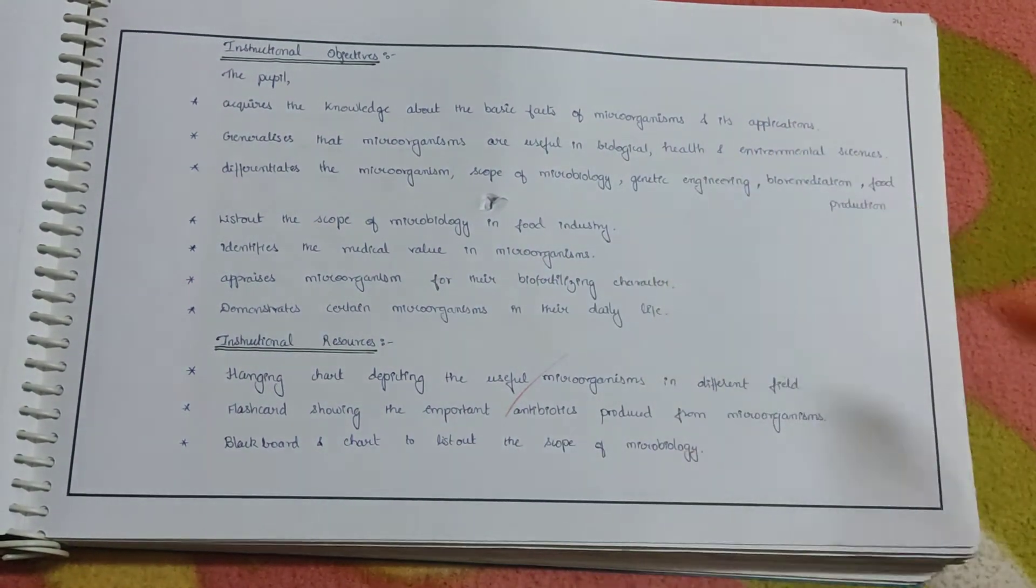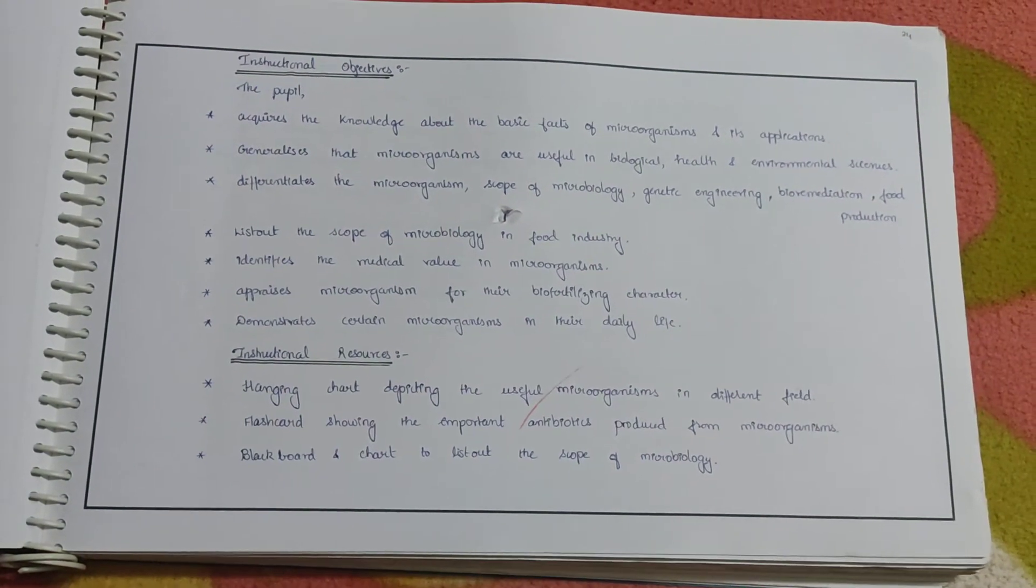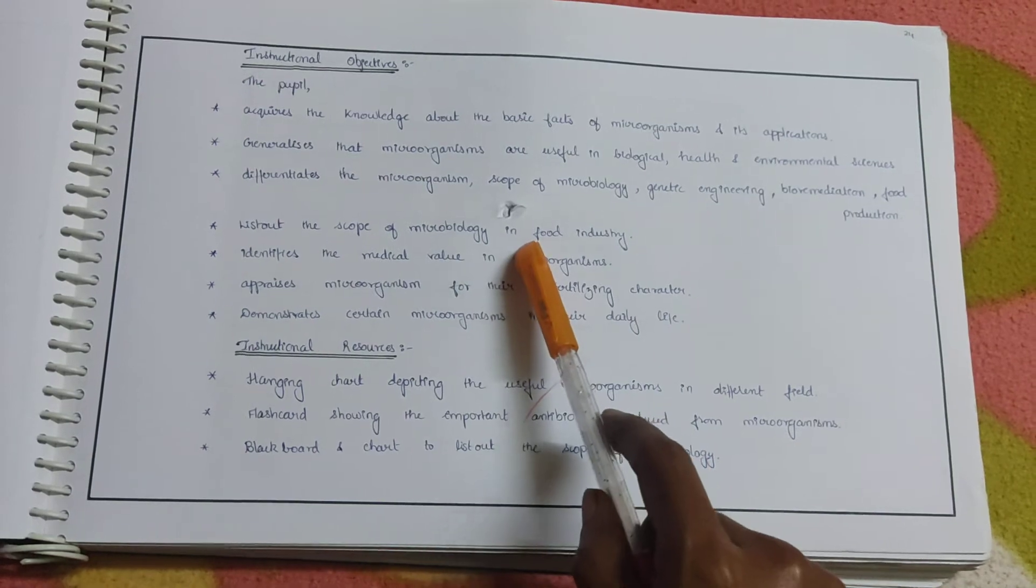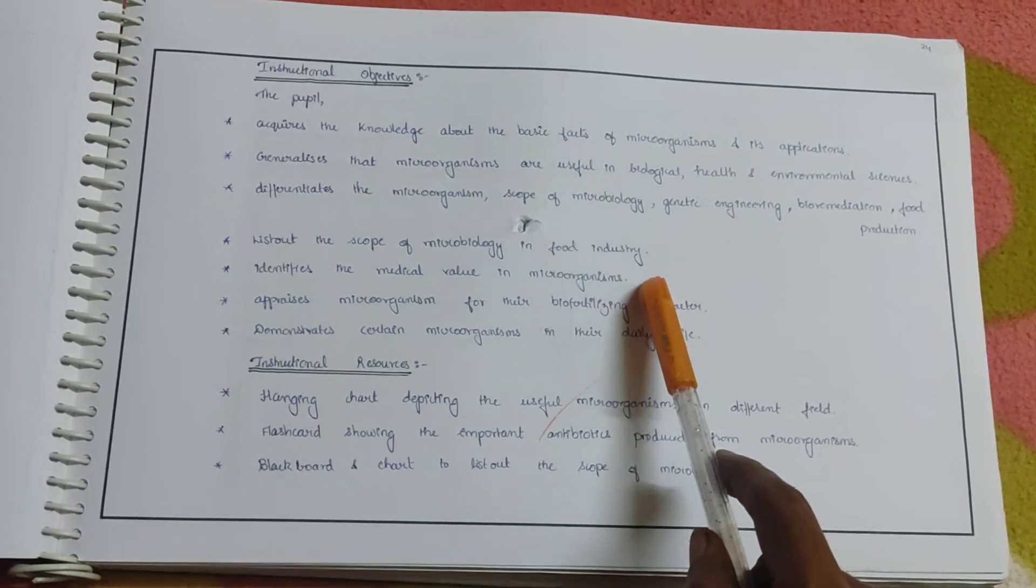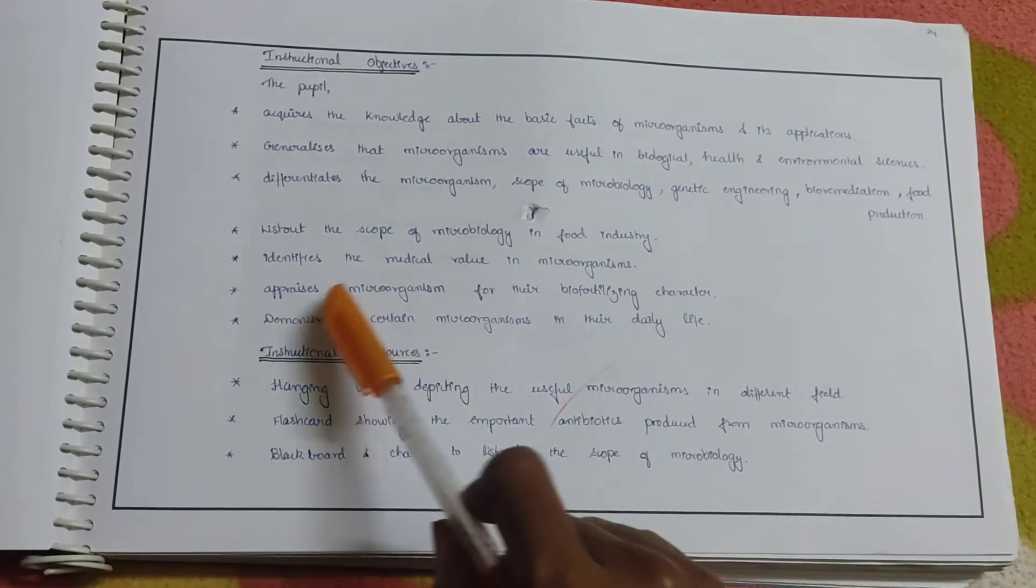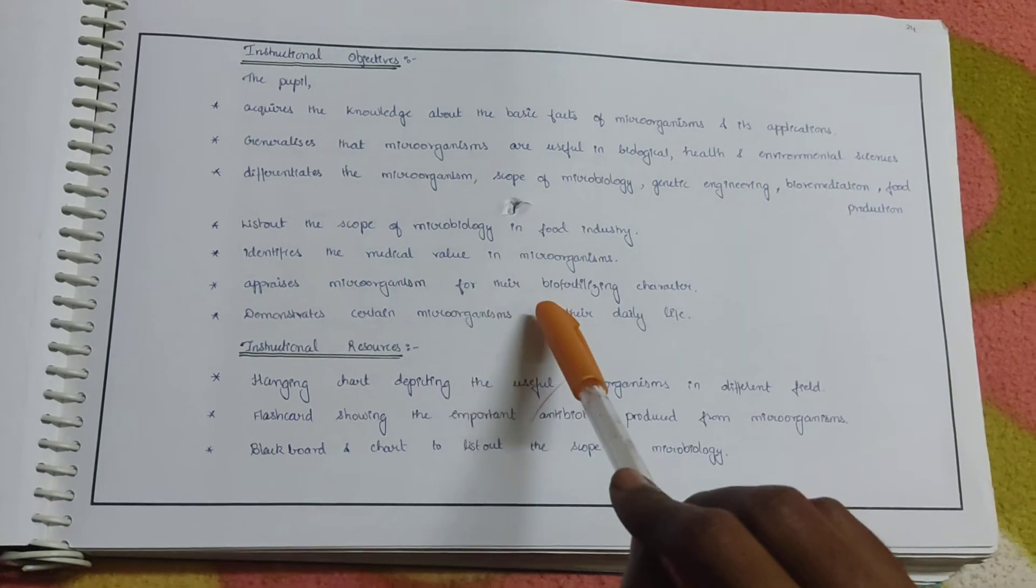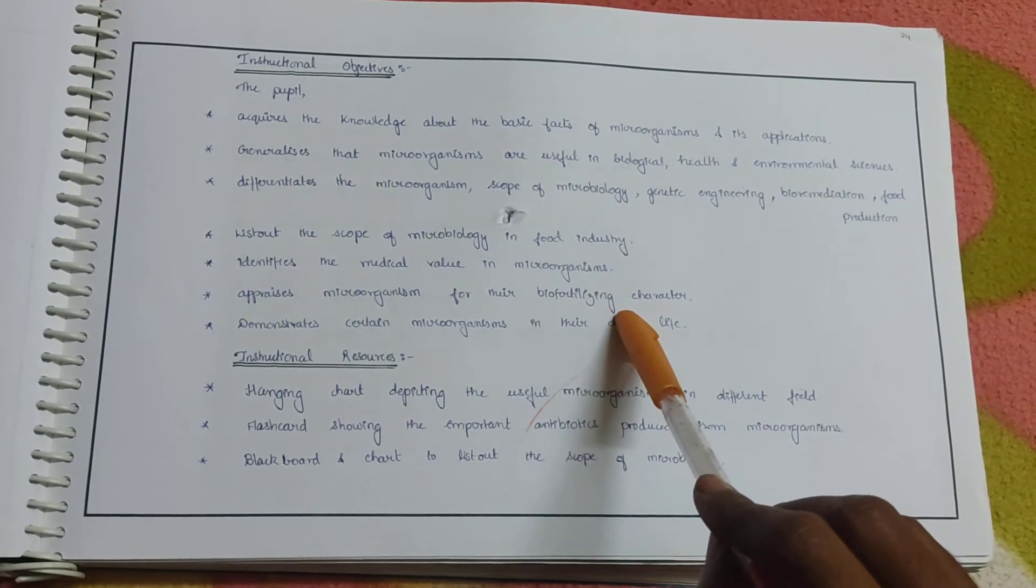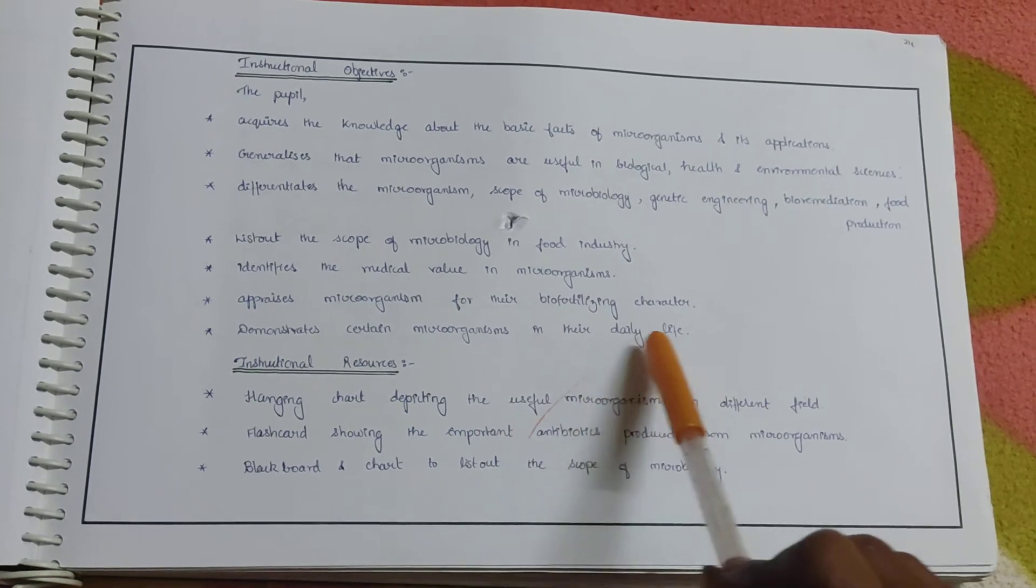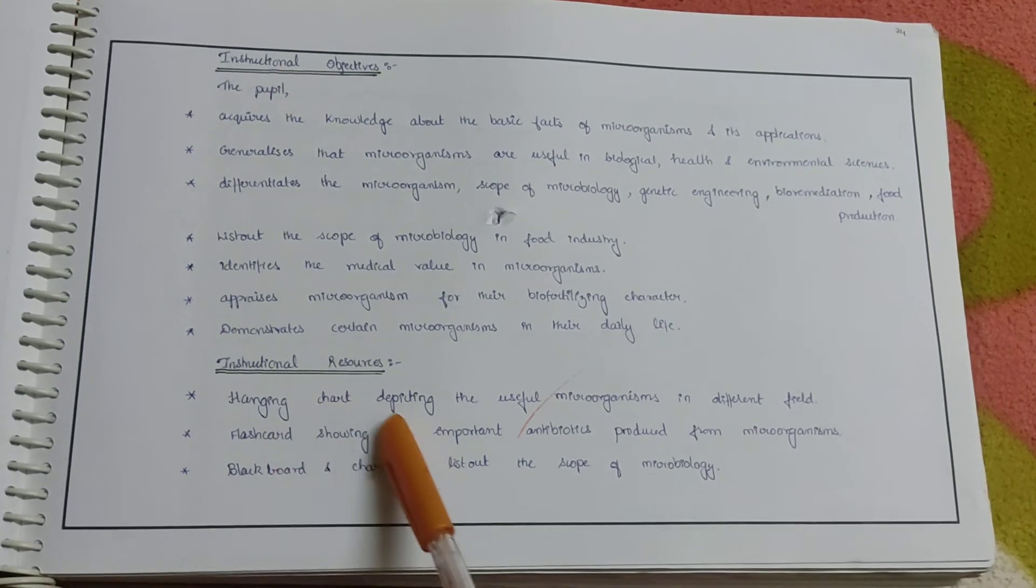Differentiates the microorganisms scope of microbiology, genetic engineering, bioremediation, food production. Lists out the scope of microbiology in food industry. Identifies the medical value in microorganisms. Apprises microorganisms for the biofertilizing character. Demonstrates certain microorganisms in their daily life.